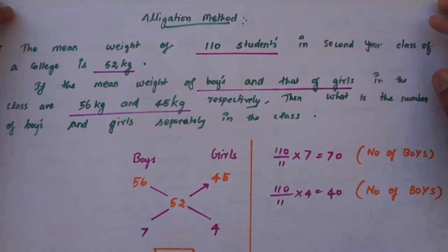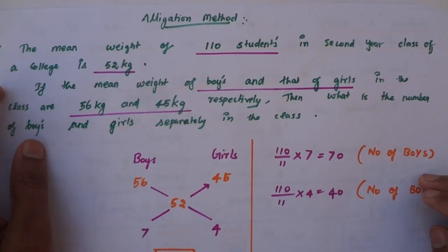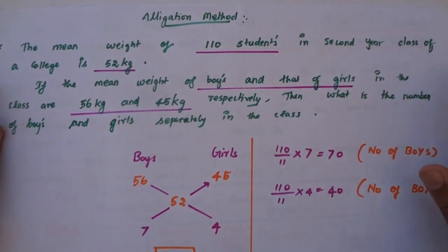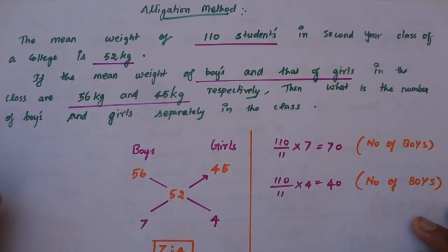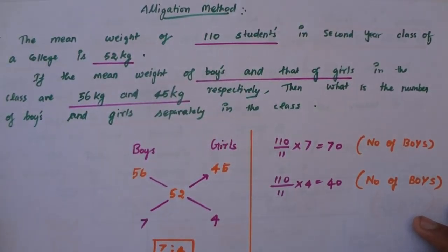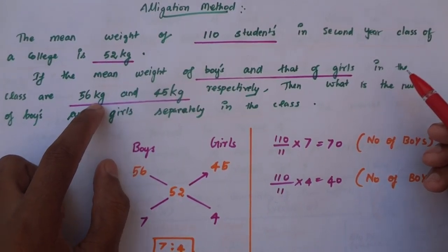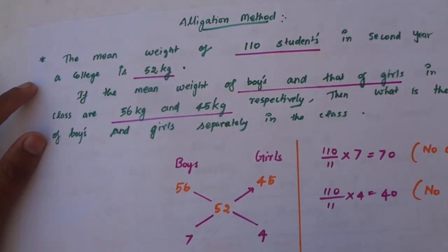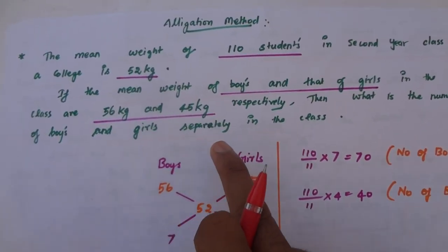Hi friends, one question of alligation. The mean weight of 110 students in a second year class of a college is 52 kg. There are 110 students. The mean weight of the boys is 56 kg and girls is 45 kg. What is the number of boys and girls separately in the class?